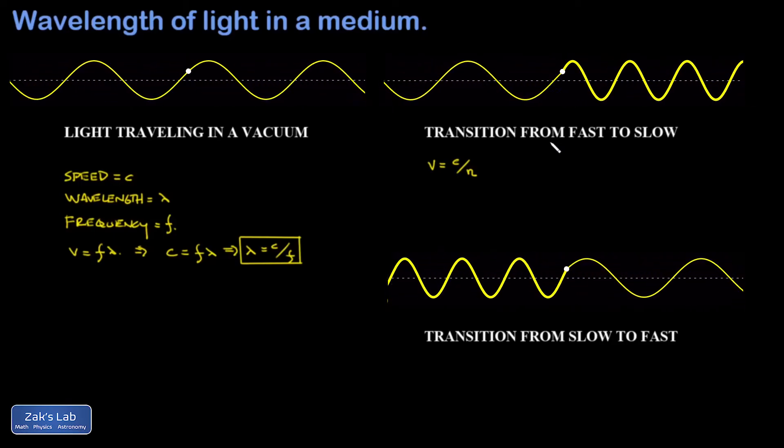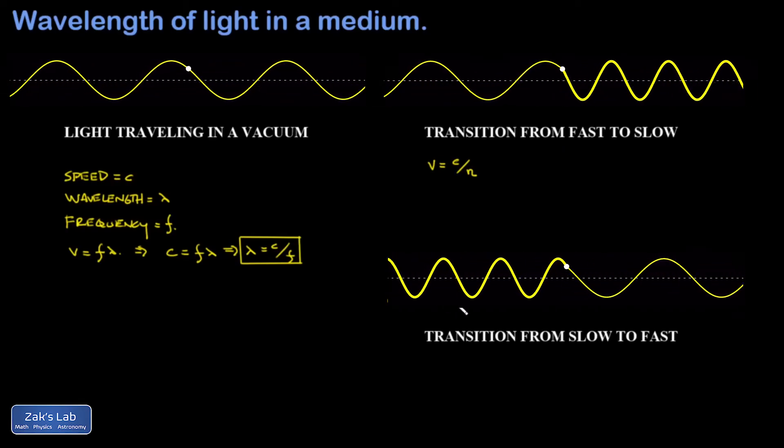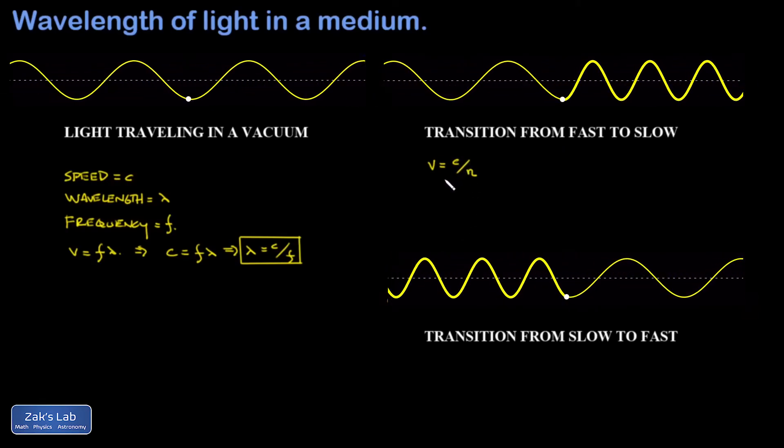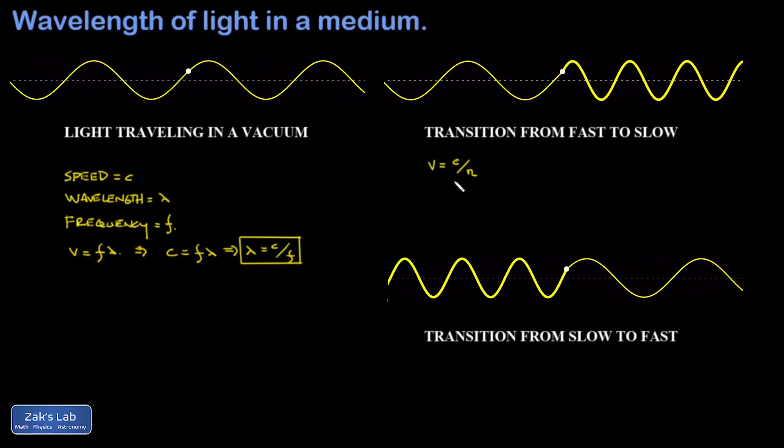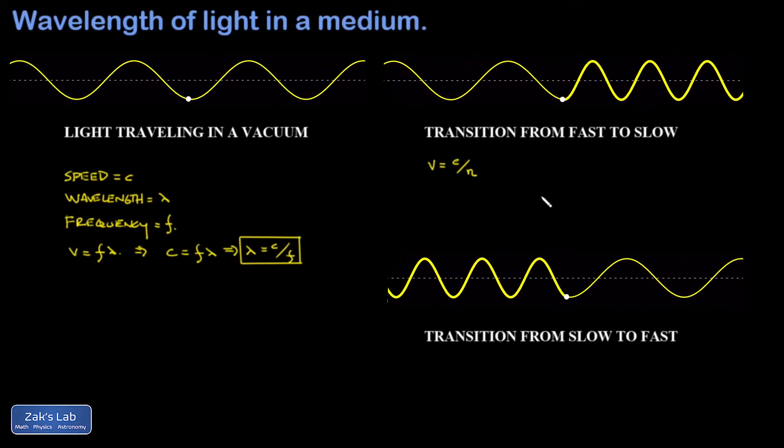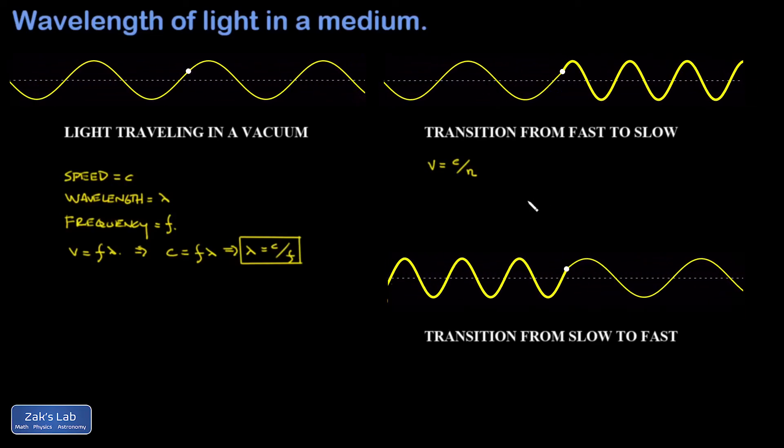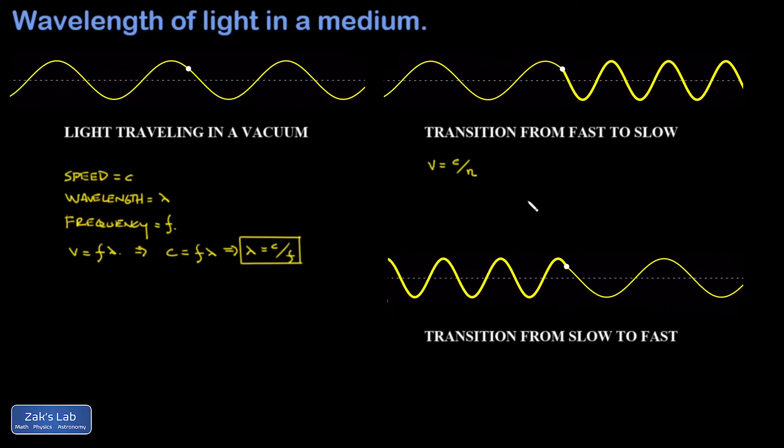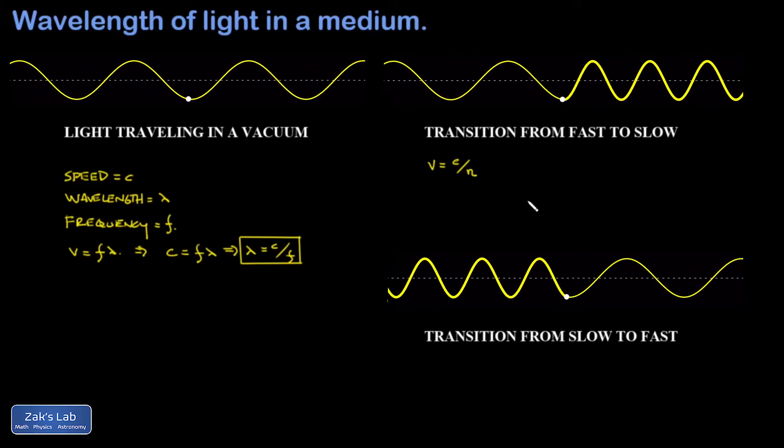Making an analogy to waves on a string, we visualize the transition of light from the fast to slow medium by tying a light string to a heavy string. And that white dot is the knot between the two strings. And of course, it's wiggling up and down at the same rate for each of these waves. Otherwise, the string would be broken.